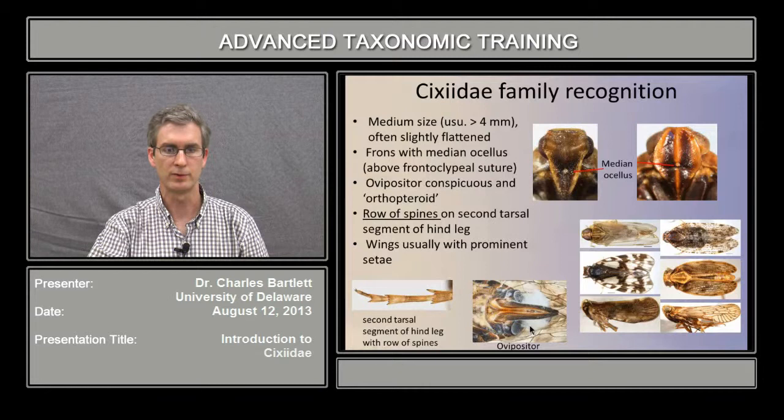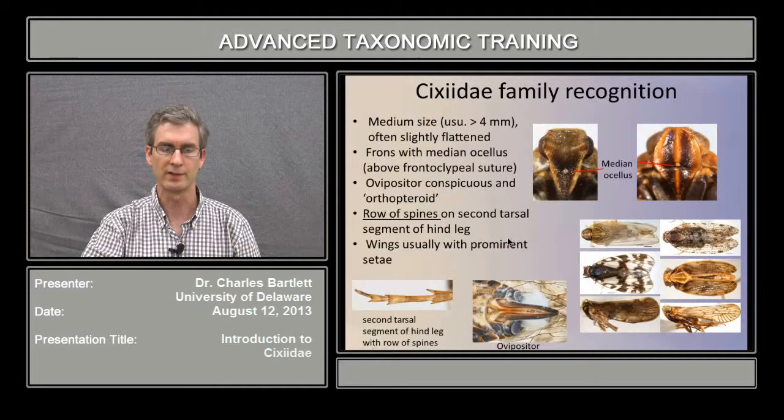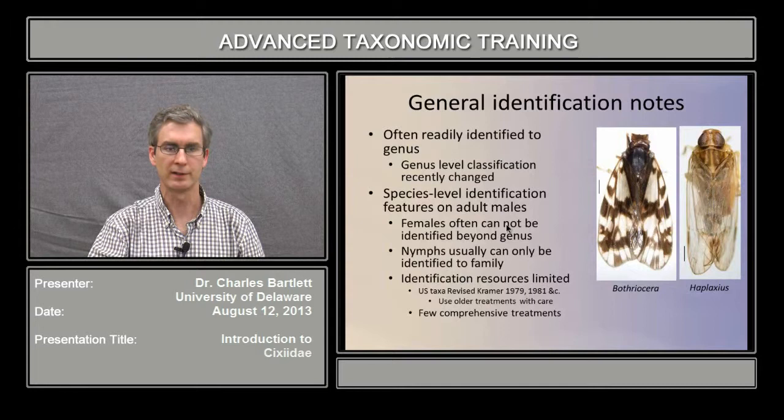The oviposa is conspicuous and is used to insert its eggs into the substrate. Most planthopper families have a reduced oviposa used to adhere the eggs onto the substrate. The second tarsal segment on the hind leg bears a row of spines, and the wings are usually prominent, membranous, and usually with prominent seedy.